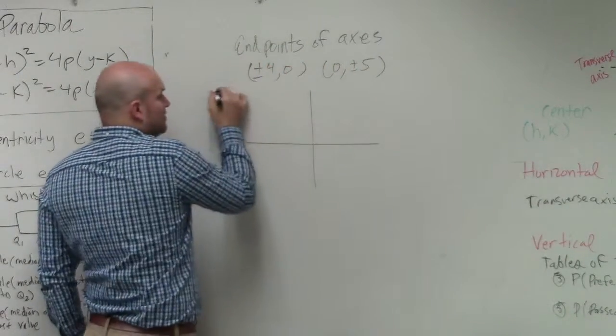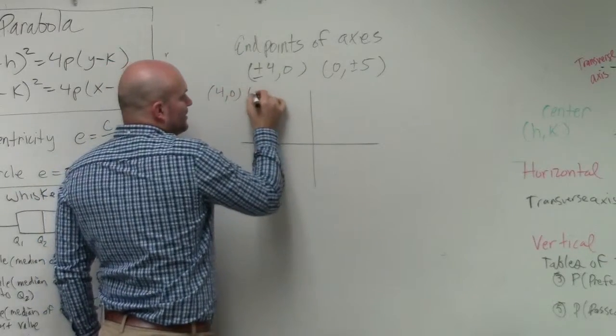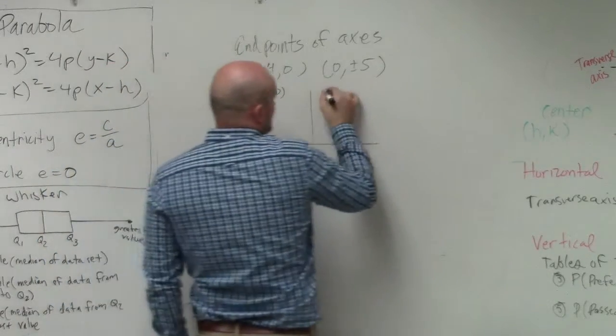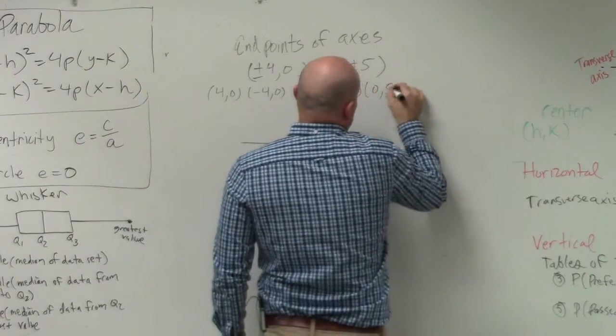So that means plus or minus 4 means I have points 4 comma 0 and negative 4 comma 0. 0 comma 5 and 0 comma negative 5.